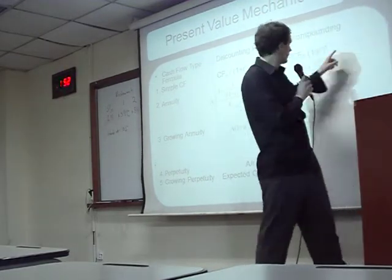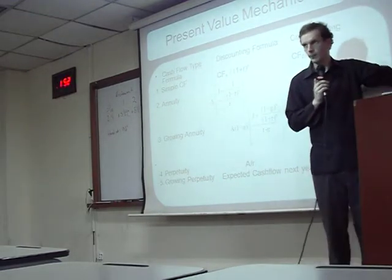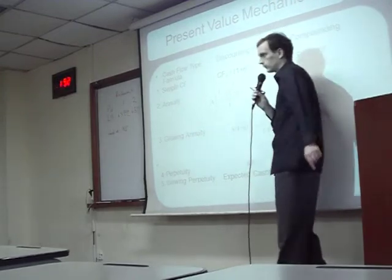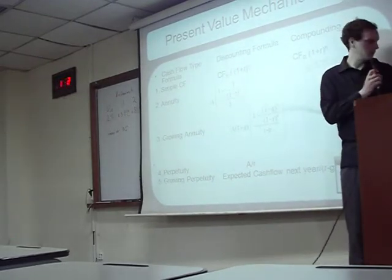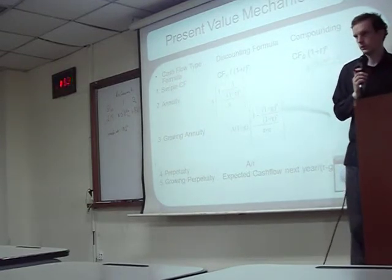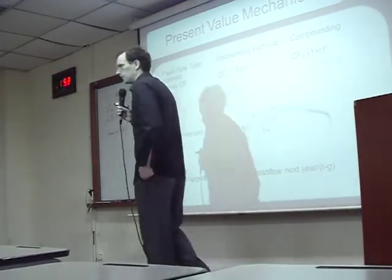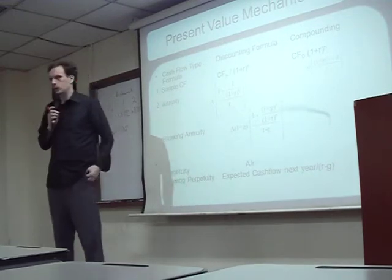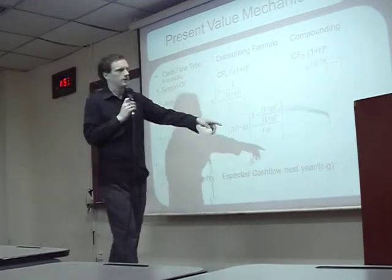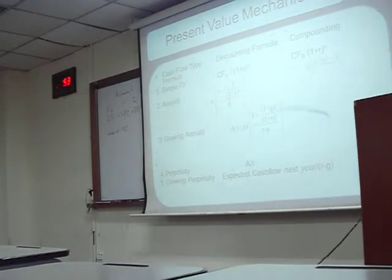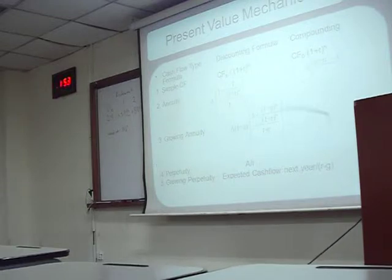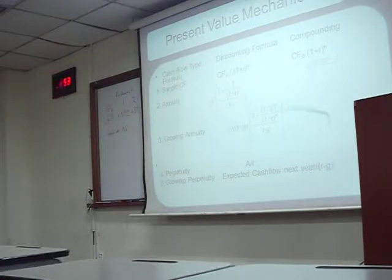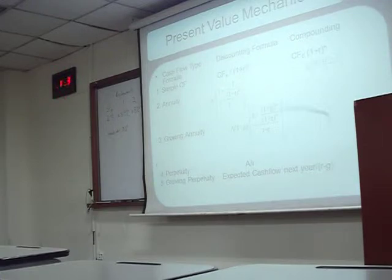So we're doing it this way: year one, cash flow 5 over 1 plus the interest rate 1.1, to the power of 1. Year two, 8 over 1.1 squared. What is the answer here? 4.5. What's the answer here? 6.6. So we add them together: 4.5 plus 6.6 is 11.1. Minus our initial investment of 10, equals 1.1.